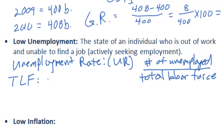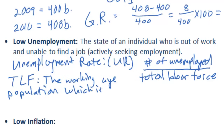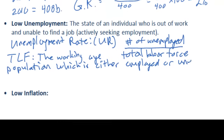The total labor force refers to the working age population of a country which is either employed or unemployed. Somebody who is an adult but is not part of the labor force might be someone who is in university and therefore not actively seeking jobs. Another example is somebody who is imprisoned or hospitalized. Only adults who are actively seeking work or are actually employed are considered part of the labor force. To find the unemployment rate, we divide the number of unemployed people by the number of people in the labor force - the unemployed plus the employed.